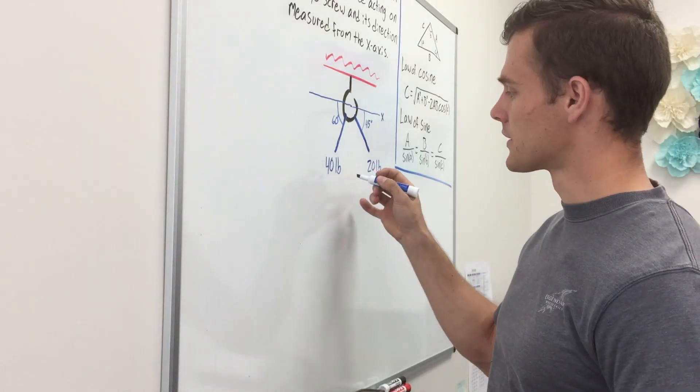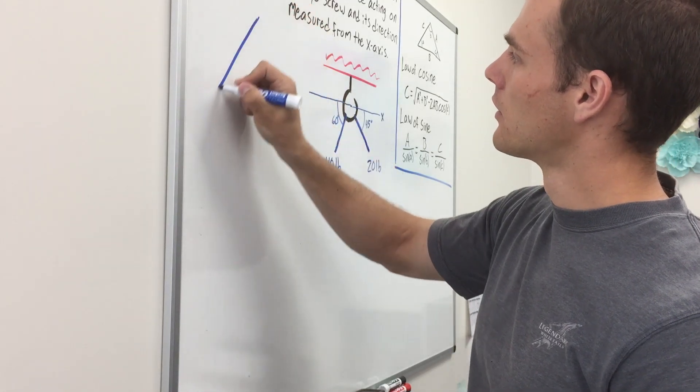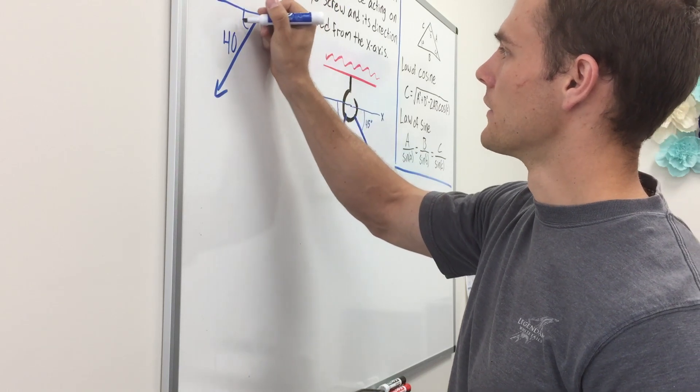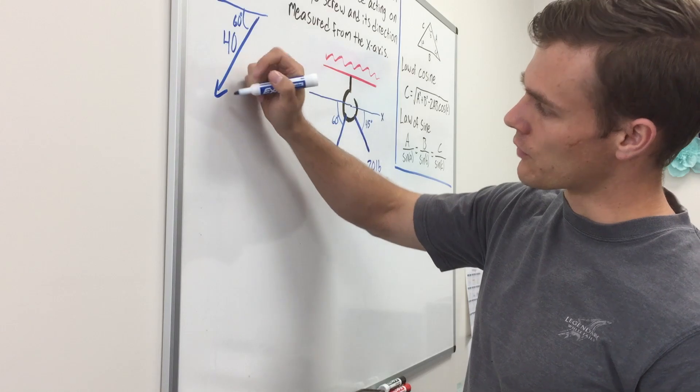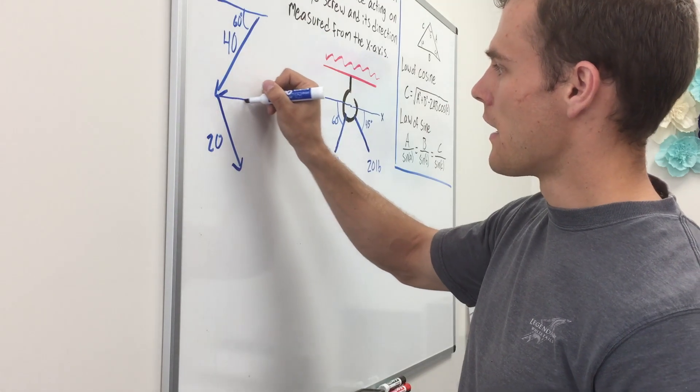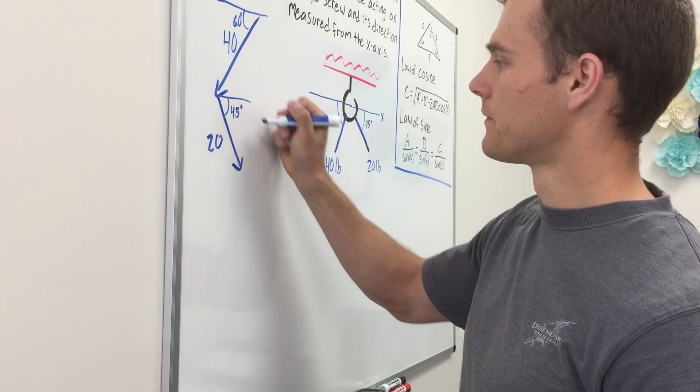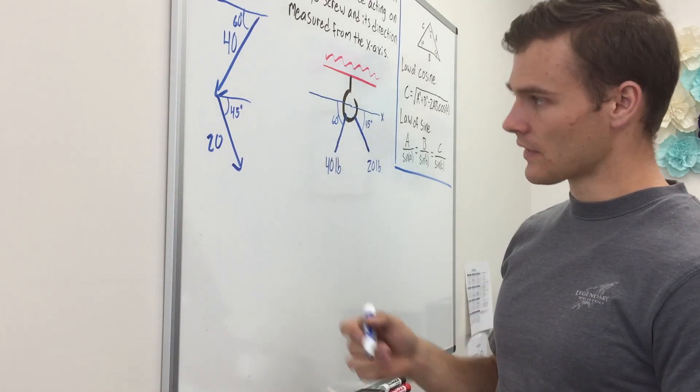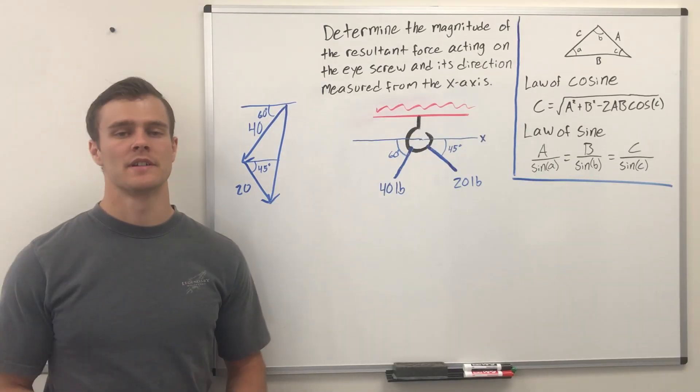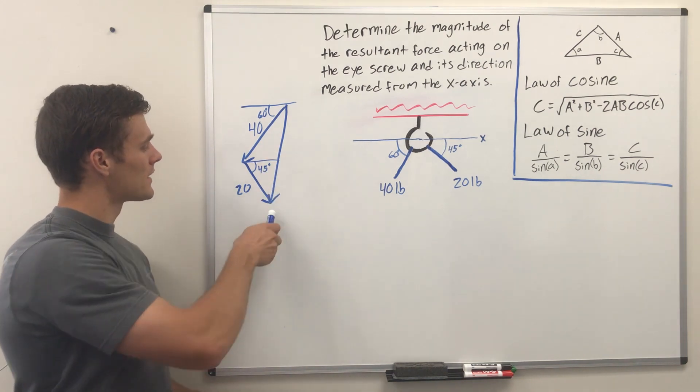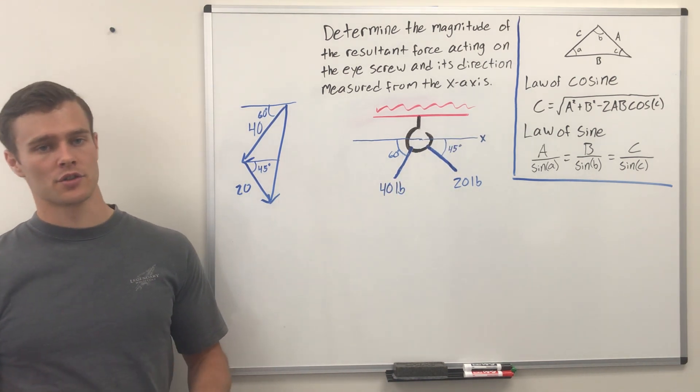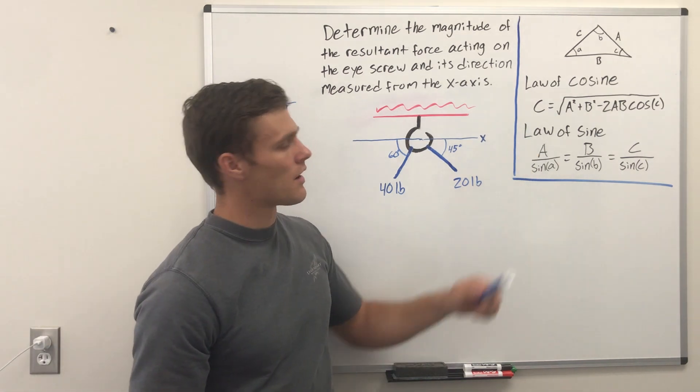We're going to represent the ropes as vectors by drawing them as arrows. We're going to draw the 40 pound force as an arrow, a little bit longer, coming off at 60 degrees. And then the 20 pound force coming off of that at 45 degrees. Now, the resultant vector is going to go from the tail of this one to the head of this one. But we need to find the length of this arrow and the direction that it is off the x-axis. We're going to do that using a little trick, using the law of cosines and the law of sines.